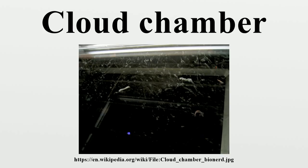A strong electric field is often used to draw cloud tracks down to the sensitive region of the chamber and increase the sensitivity of the chamber. While tracks from sources can still be seen without a voltage supply, background tracks are very difficult to observe. In addition, the voltage can also serve to prevent large amounts of rain from obscuring the sensitive region of the chamber, caused by condensation forming above the sensitive area. The black background makes it easier to observe cloud tracks. Before tracks can be visible, a tangential light source is needed.